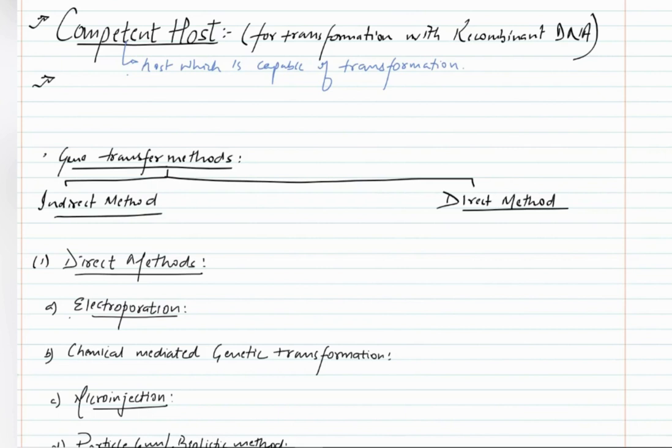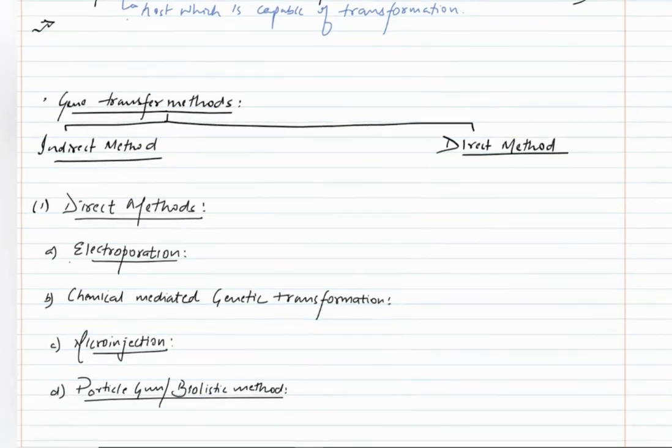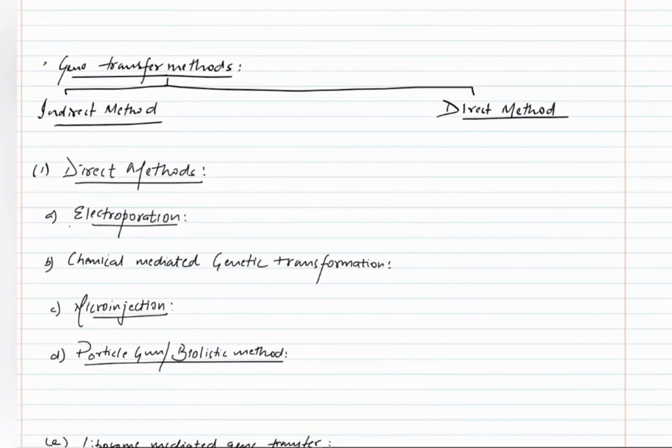Now, normally DNA is a charged molecule. It is hydrophilic because it has phosphate residues in its backbone. Therefore it cannot easily cross the cell membrane, because the cell membrane is made up of phospholipids and charged particles cannot easily cross it. Therefore, to make the host competent, there are various methods which are known as gene transfer methods.